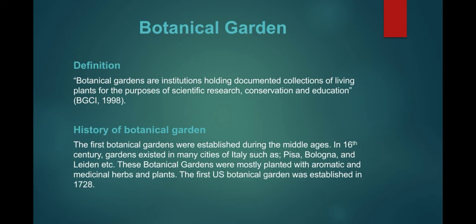Botanical garden — definition. Botanical gardens are institutions holding documented collections of living plants for the purpose of scientific research, conservation and education. A botanical garden is actually an ex-situ conservation, which means a type of conservation where the living plants are grown away from the original habitat.